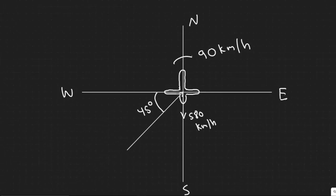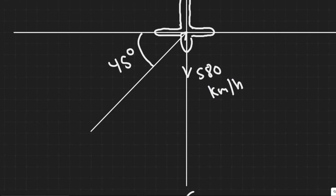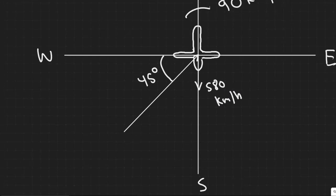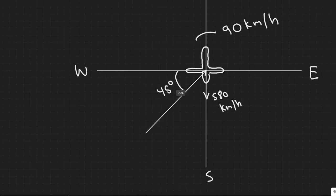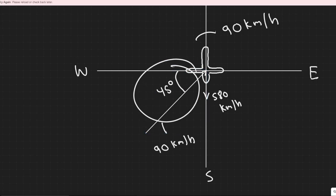Here's our diagram. We have the plane heading south at 580 kilometers per hour, with northeast and southwest directions indicated. We also have a wind blowing from the southwest at 90 kilometers per hour. It's going to be at 45 degrees because it's in the middle of each compass direction, so keep that in mind.